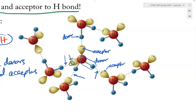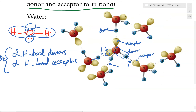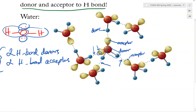Every part of a water molecule can be utilized to form Hydrogen bonding. This is why water, even though it's a small molecule, has such high boiling points and melting points compared to all substances of similar size.